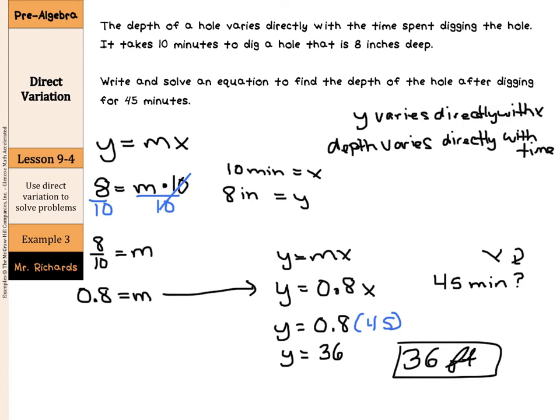So, when given a word problem, we need to solve for the constant of variation, identify your variables, what's Y, what's X, find that constant of variation, write your direct variation equation, and substitute in as you need to.